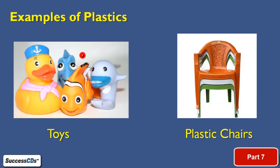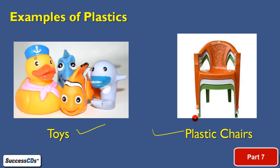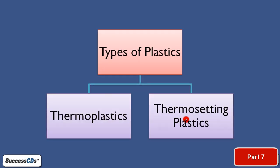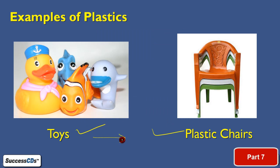Examples of things you can make from plastic: you must have seen many toys in the market that are made of plastic. As you can see in the figure, all these toys are made up of plastic. We have plastic chairs also. So this kind of material you can actually form by the use of plastics — plastics have quite a wide range of uses.